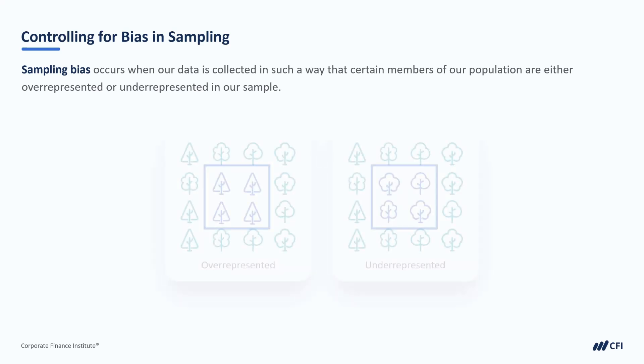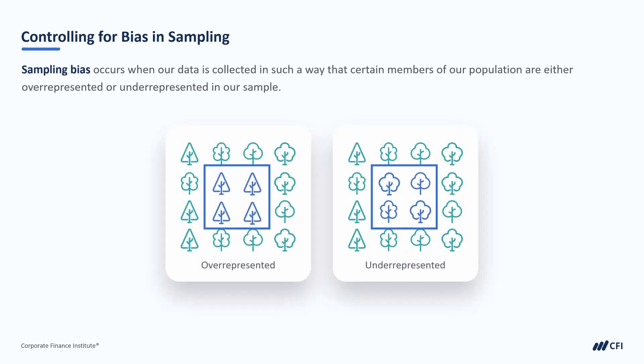As we have seen, a large sample is important. But we have to be aware of bias in our sampling. Sampling bias occurs when our data is collected in such a way that certain members of our population are either overrepresented or underrepresented in our sample.